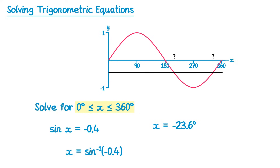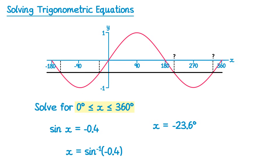However, we don't have either of those solutions at the minute — we have negative 23.6. So what we're going to do is extend the sine graph backwards. Remember, the trigonometric graphs go on forever in both directions. It will continue and come back to the axis at negative 180 degrees. If we extend our horizontal line backwards, we'll find two more solutions, though neither are between 0 and 360. One of them is the solution we have: negative 23.6 degrees.